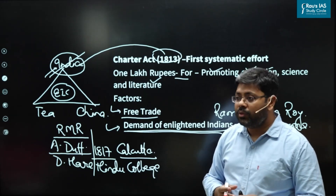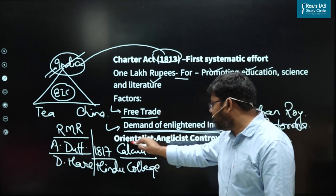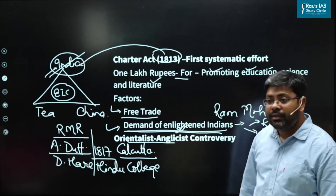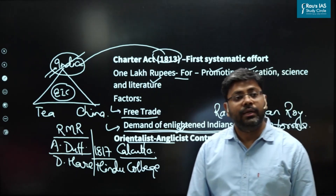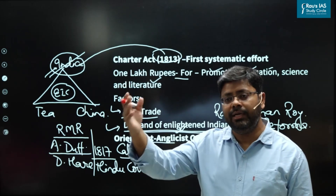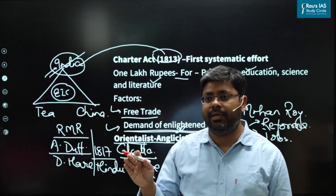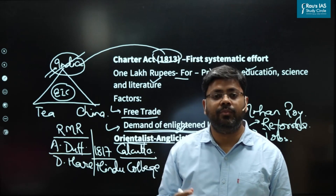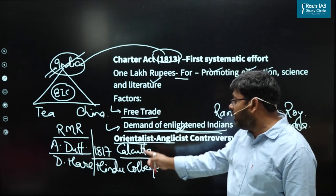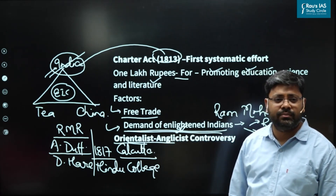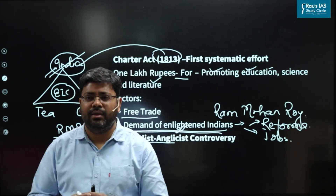One lakh rupee was given for educating Indians, but there was a trouble — this money could not be utilized for a very long time, because there was a big controversy between the Anglicists and the Orientalists. The Anglicists said British-like education with English as the medium should be used. The Orientalists said the British cannot suddenly replace such a big system in such a big country, so one lakh rupees should rather be used to promote the Indian style of traditional education. The controversy between Anglicists and Orientalists left the money unutilized for a long time.